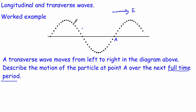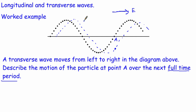The tricky bit is deciding which way this particle is going to go first — upwards or downwards. The easiest approach is to sketch what the wave would look like a little bit later. Because it's moving to the right, the wave shifts, and the particle will be down here a short time later. So we know that in the first quarter of the time period the particle moves downward, then it goes upward, and then back down again.